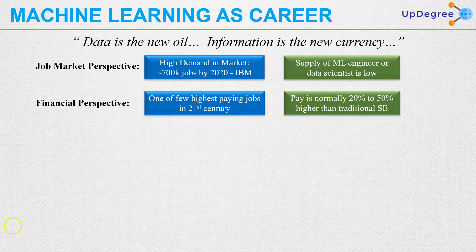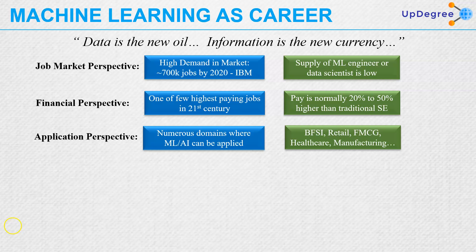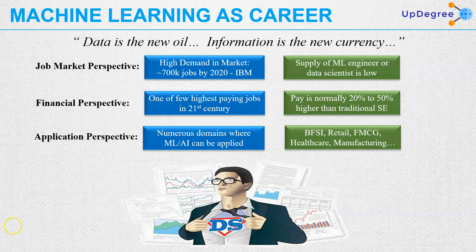From a financial perspective, it is one of the few highest paying jobs in the 21st century. Pay is normally 20% to 50% higher than traditional software engineering. From an application perspective, as we have already seen, it has numerous domains where ML and AI can be applied — like BFSI, retail, FMCG, healthcare, manufacturing, and more. This is the superpower that enables a successful career.